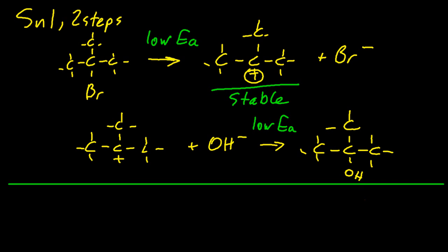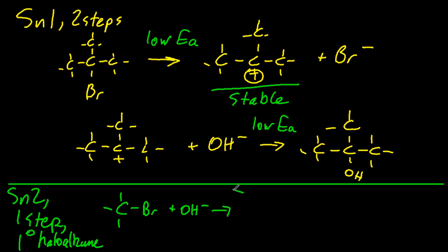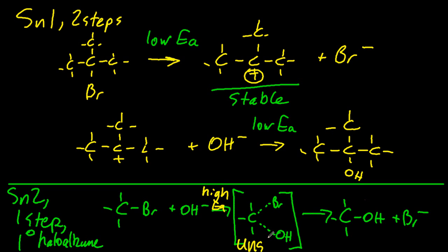The SN2 process is just one step - a one-step process with primary haloalkanes. Let's choose bromomethane. This one step does cheat a bit; it has an intermediary. You can see that this is the intermediary. It has a very unstable character. It's a high activation energy step, so it's unlikely to happen - it's going to be slower. SN2: high activation energy, slower step.